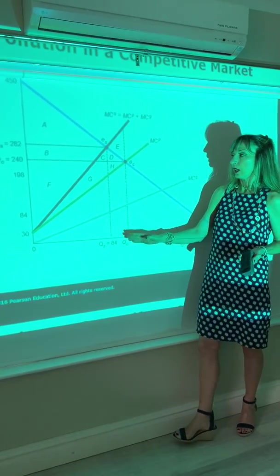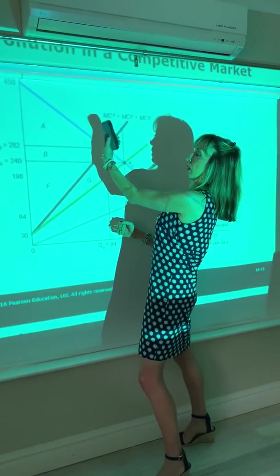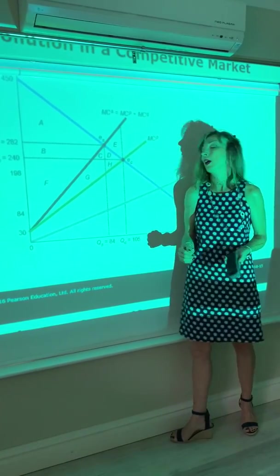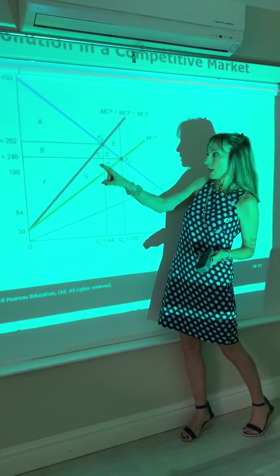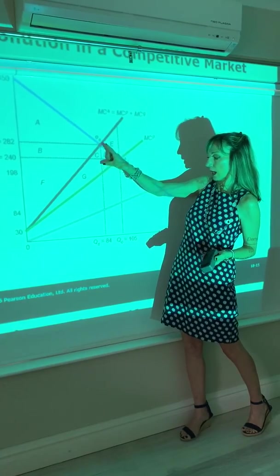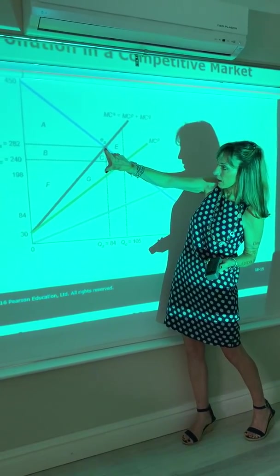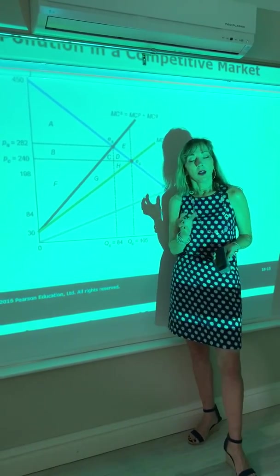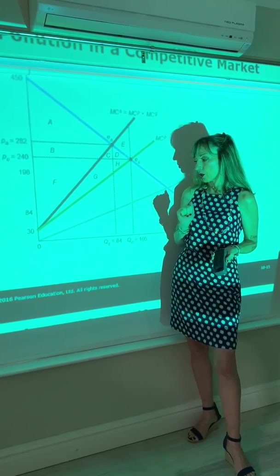Or alternatively, you could have a tax causing the private marginal cost to pivot up. So long as you get that tax right, like a specific tax correct at the social optimum level, this distance here, that tax will work and it'll bring about the social optimum.